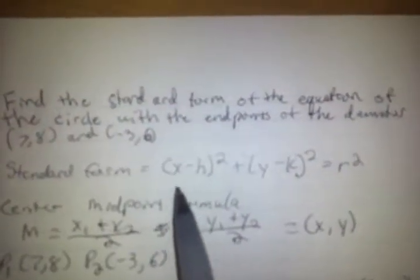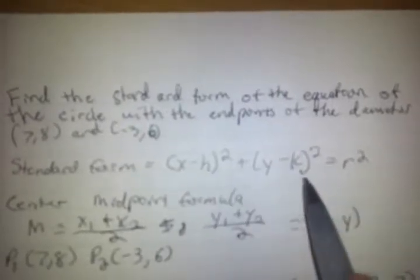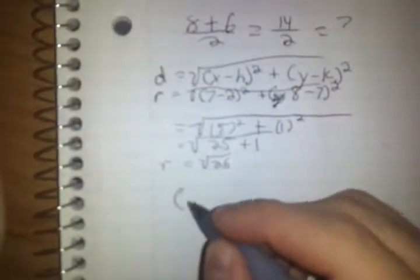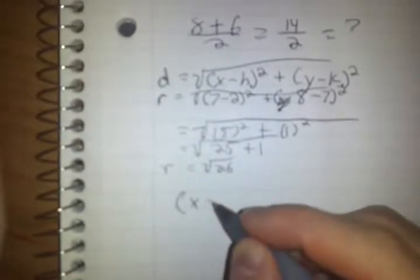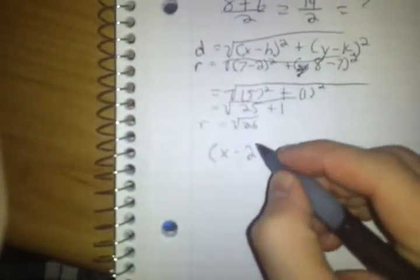Going back to our standard form, we are going to plug in the h and k and also our r value. Your final answer will be (x - 2)², plus (y - 7)² equals...